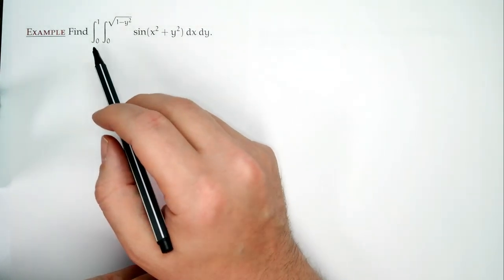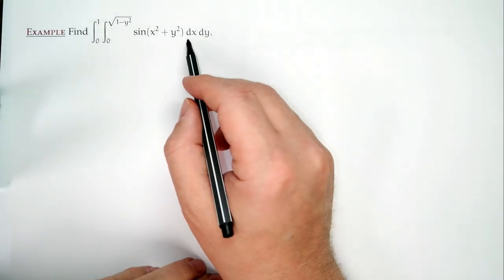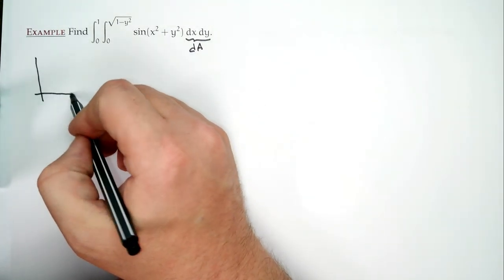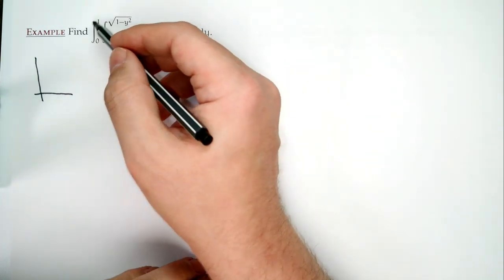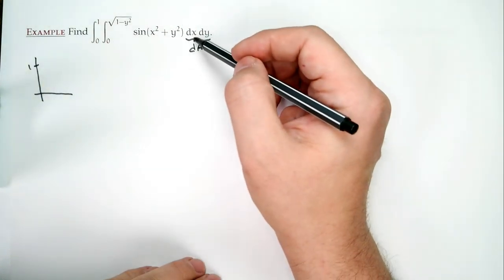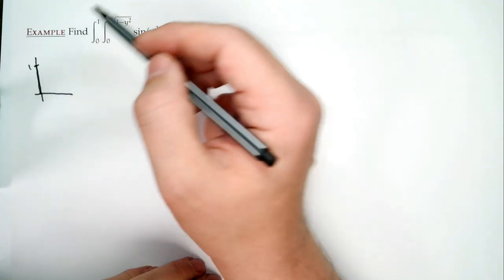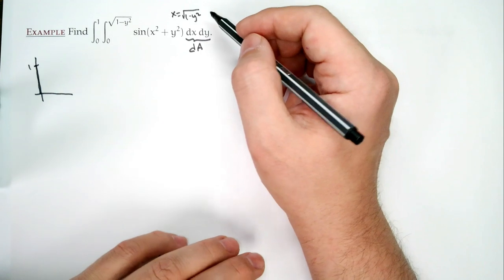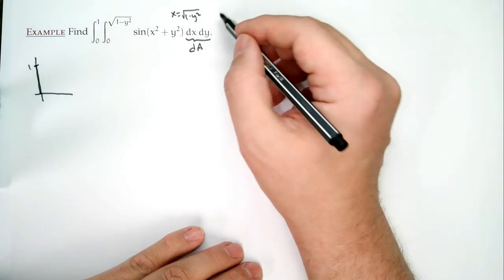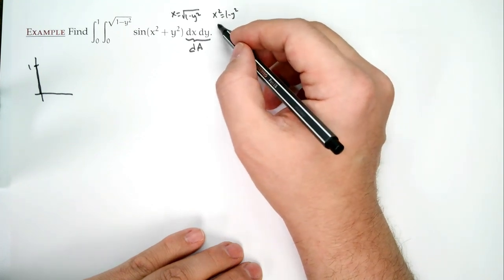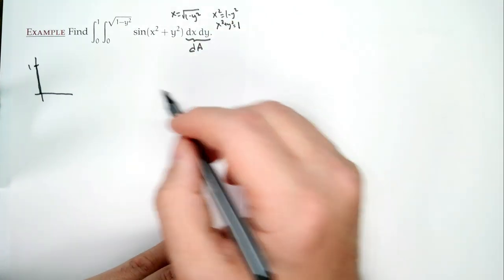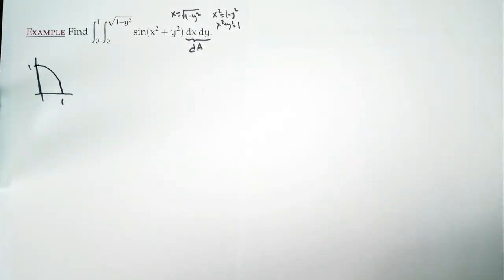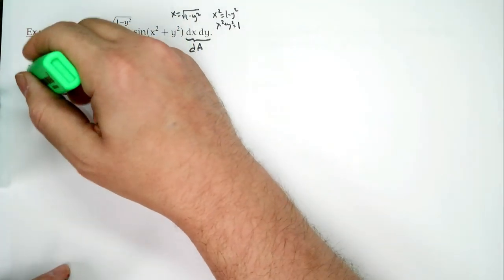Let's look at our region. We're told y goes from 0 to 1, and x goes from 0 to √(1 − y²). Squaring, x² = 1 − y², so x² + y² = 1 — it's going out to the edge of a circle of radius 1. That's the region: the quarter disk in the first quadrant with x² + y² ≤ 1.